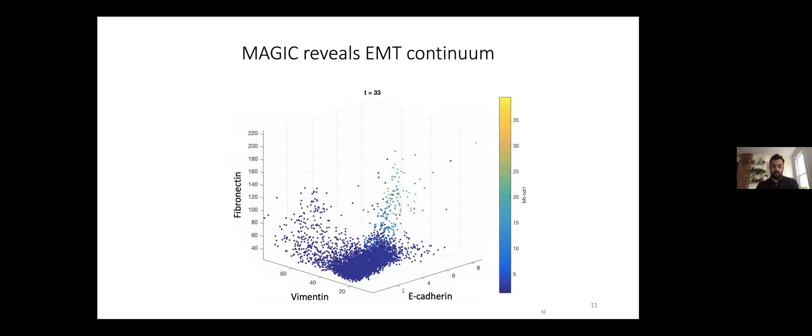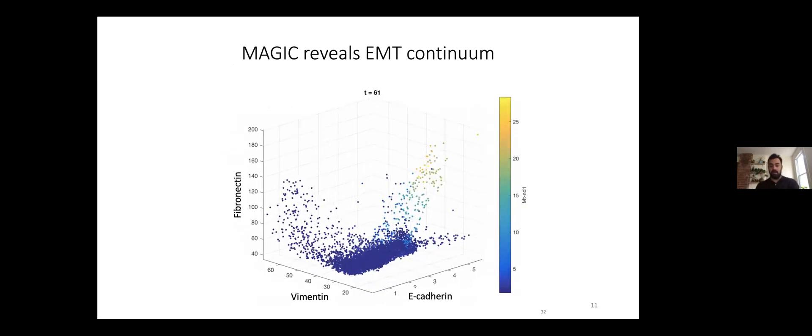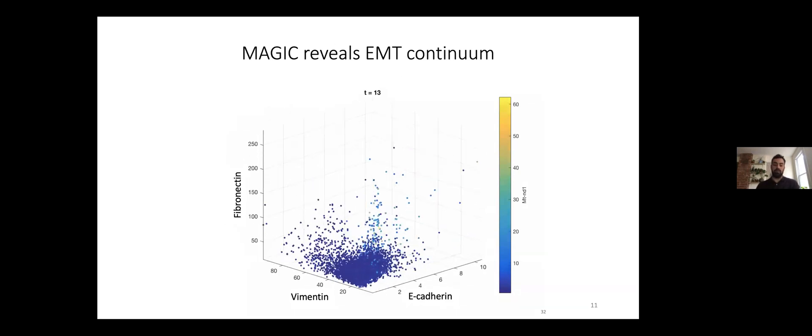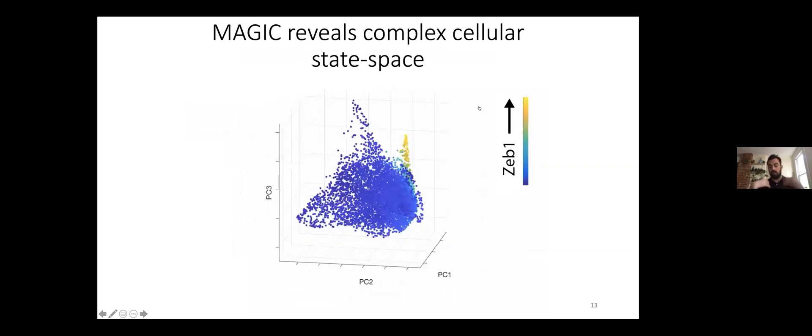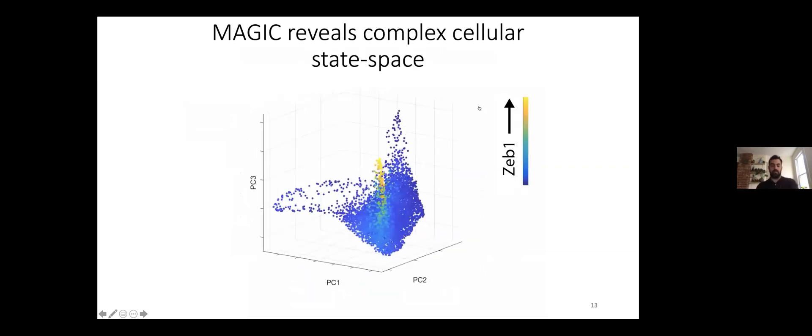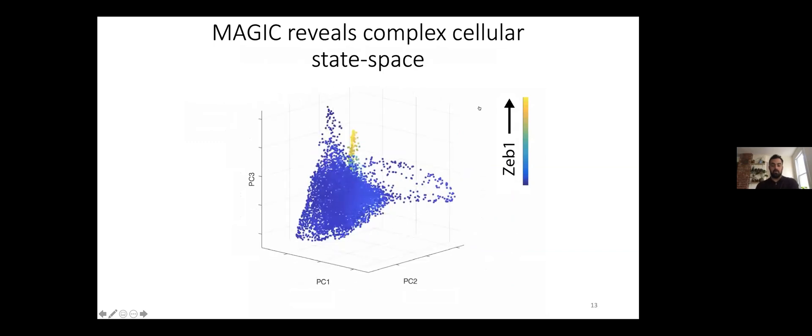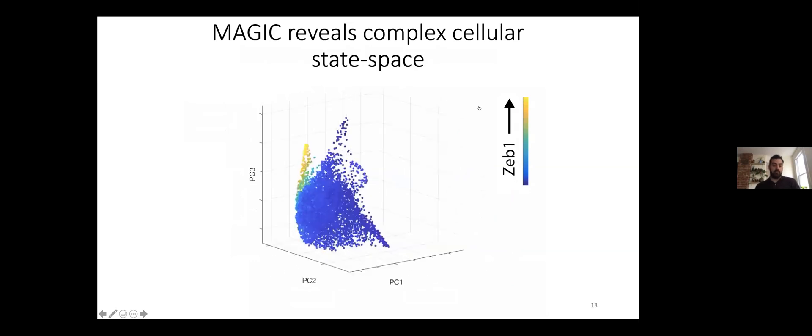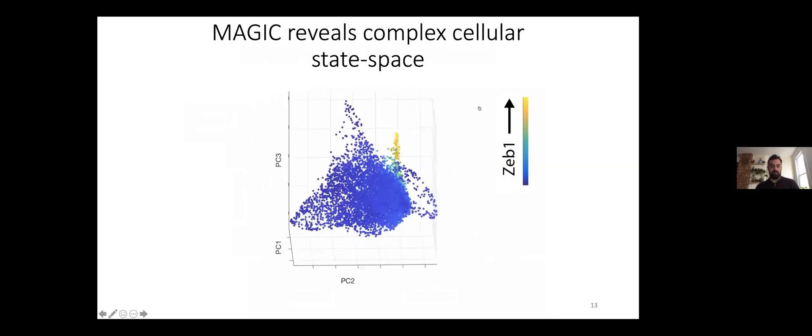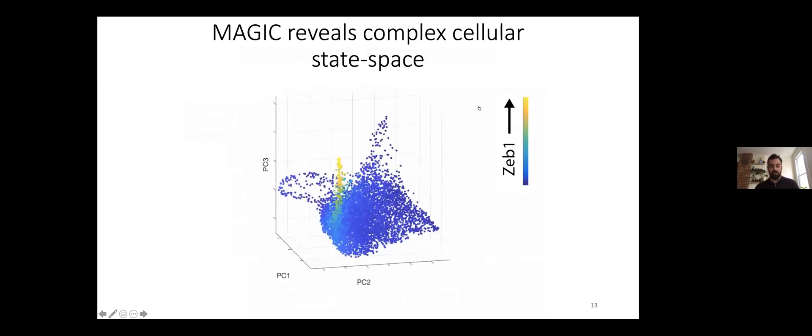We measure the cells and run our algorithm, and gradually we can recover the underlying structure in the data. In particular we can identify epithelial cells on the right and mesenchymal cells here on the left, but actually most of the cells are somewhere in between. They're transitioning from one state to another and our algorithm was able to identify these states. After doing this imputation, after fixing the data, we identified that there's this complex cellular state space or phenotypic state space.